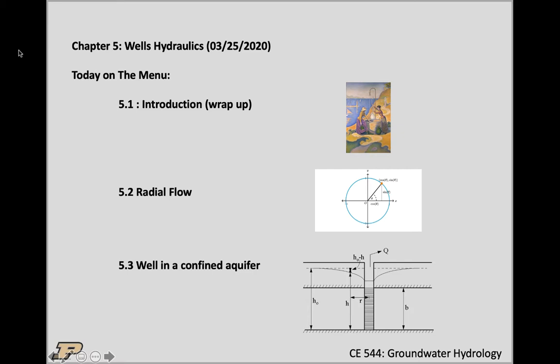So today we'll talk about wells again — we'll wrap up the introduction. I started last time with just one more thing: stating the assumptions. Then we'll talk a little bit about radial flow and radial coordinates, because wells are basically points on the piezometric surface, so when you start pumping you're pumping from all around, not just in the x and y direction like we've seen in chapter 4. So we'll have to address radial coordinates. Finally, we'll get into the equations of flow for a well in a confined aquifer to sort of introduce what's to come.